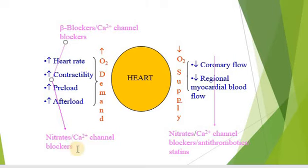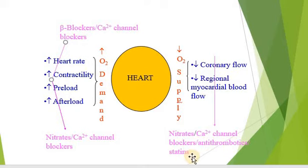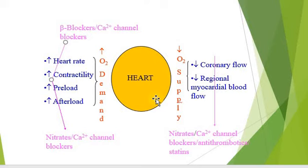If we alter the oxygen supply, it is achieved by the use of nitrates and calcium channel blockers. It can also be achieved by use of antithrombotic agents called statins, which basically reduce the deposition of platelets to the heart endothelium, or decrease the cholesterol, fats, or LDL level. This also facilitates the reduction in symptoms of coronary heart disease and leads to a decrease in the progression of the disease.